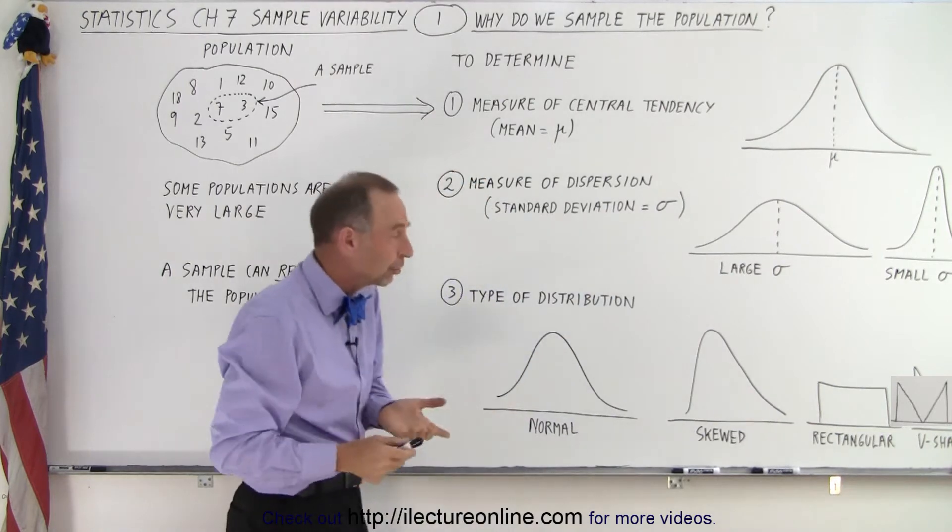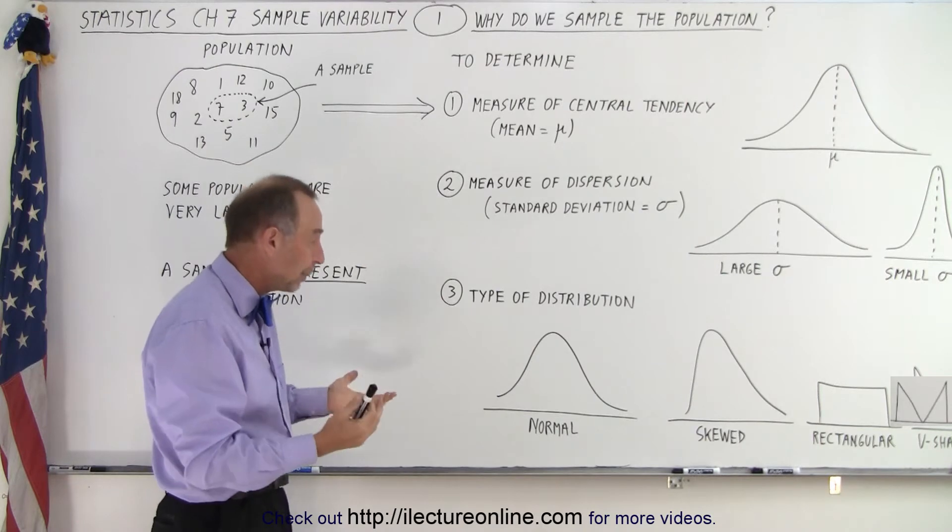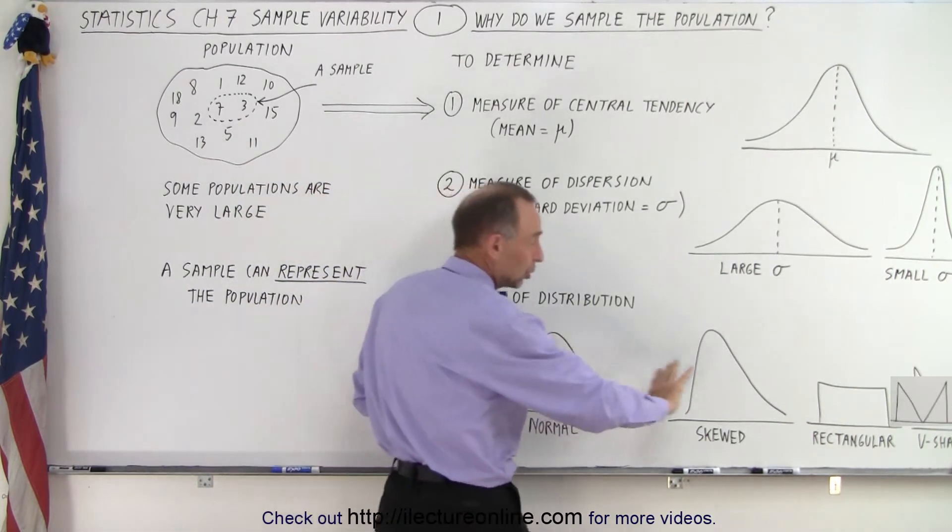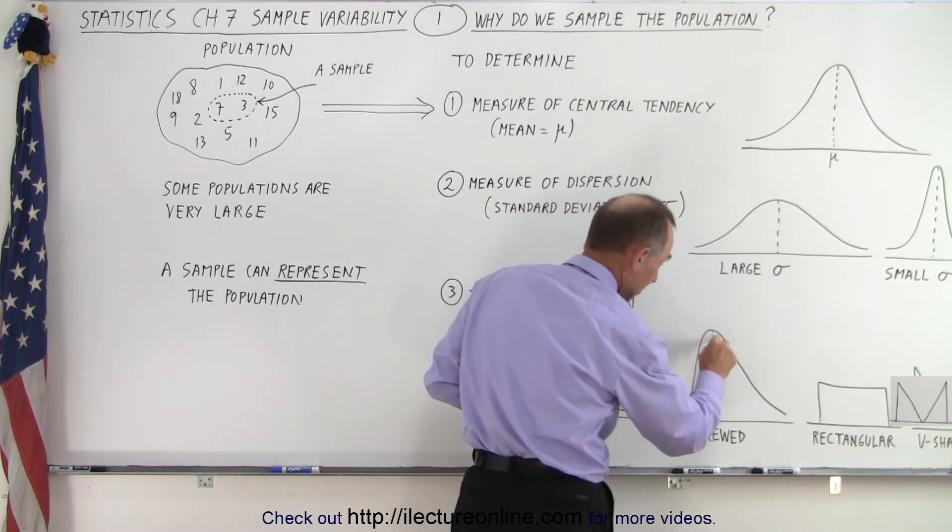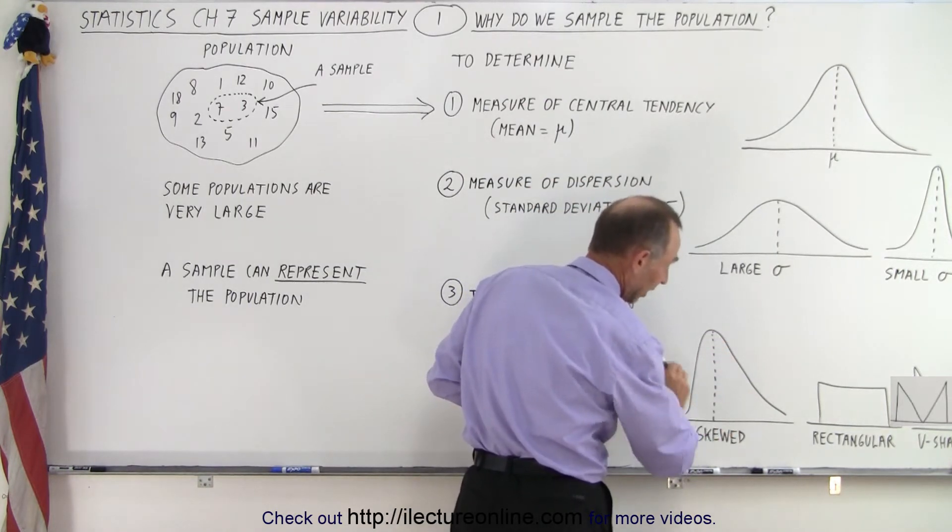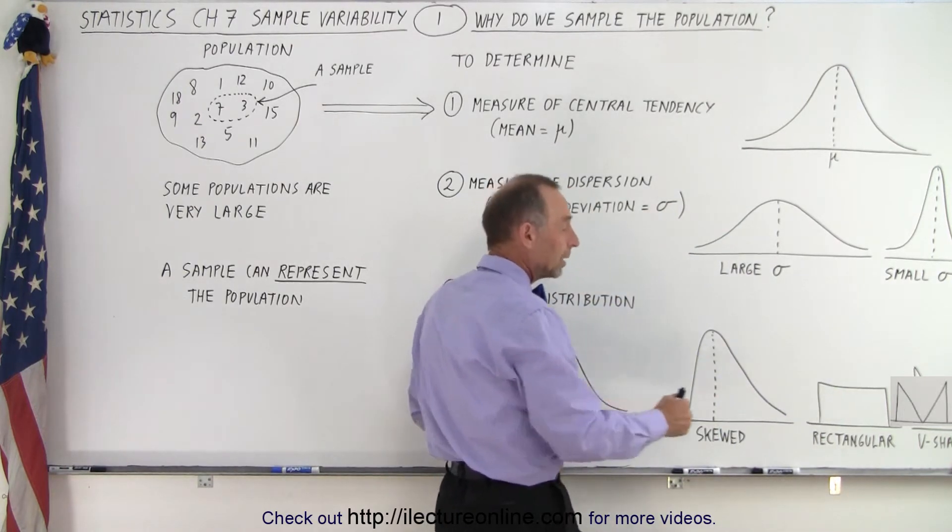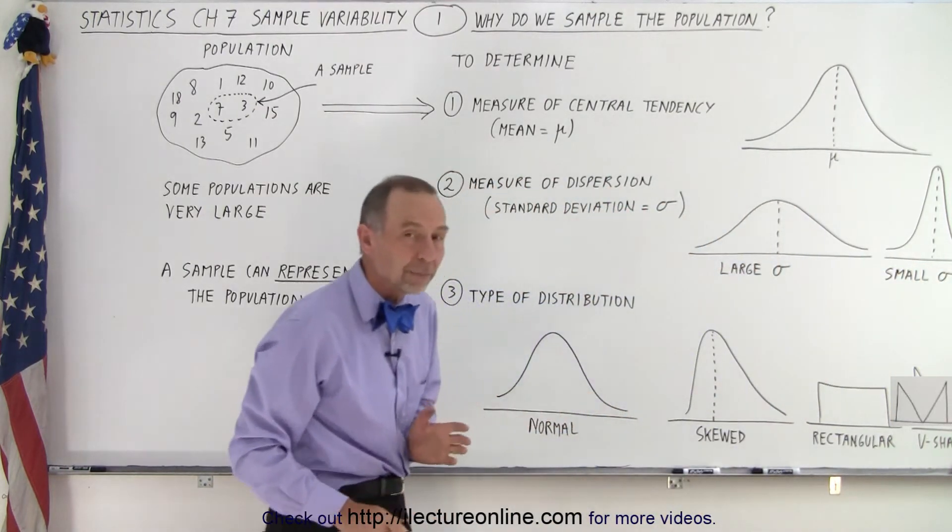And then we may want to determine the type of distribution that we have in the population. Typically we would expect a normal distribution, but it could also be skewed. In this case it's skewed to the right because notice here that the mean is somewhere on this side, so more the data is skewed towards the right. Or it could be rectangular in shape, or it can be U-shaped, or it can be a number of other different shapes.